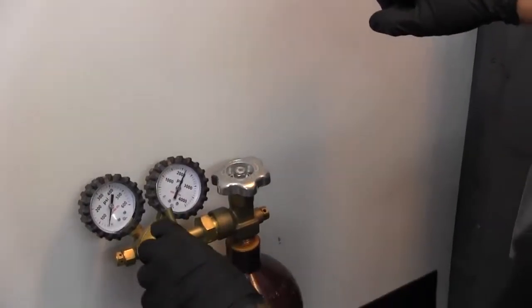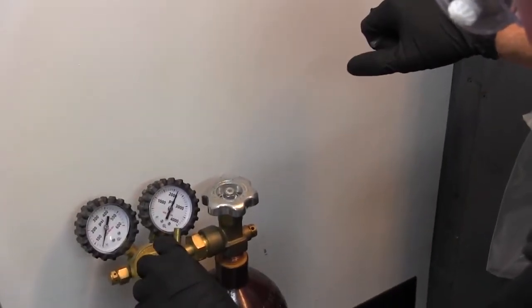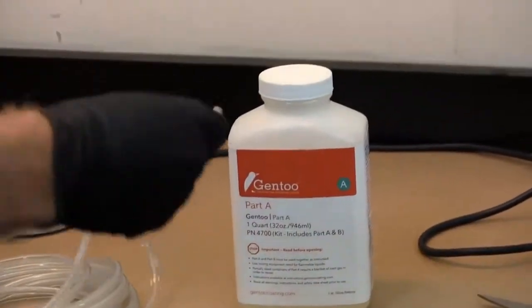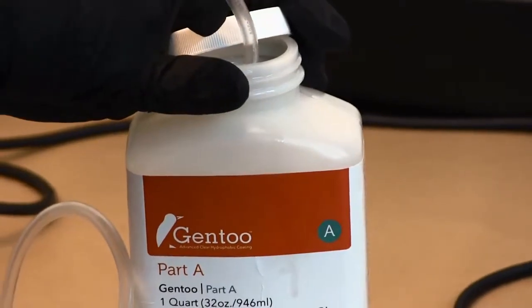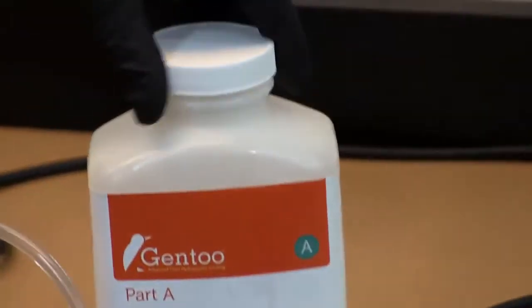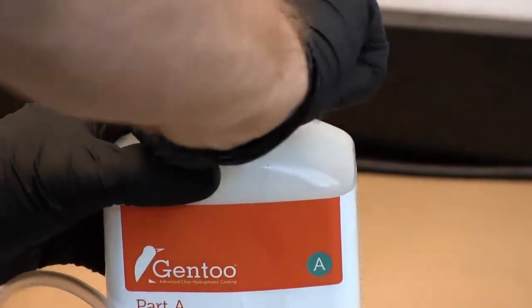If the entire container of Part A will not be used, inert gas, preferably argon or nitrogen, must be used to blanket the headspace of the remaining liquid in the container. If this is not performed, Part A will be rendered unusable.